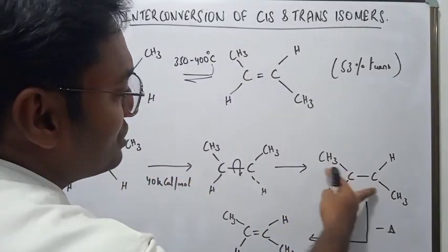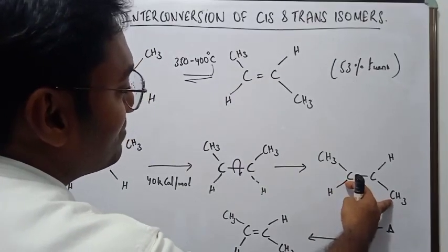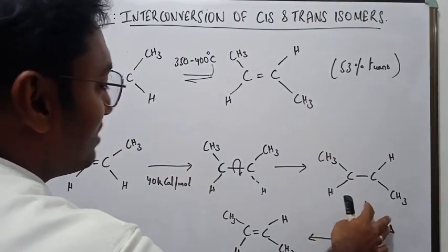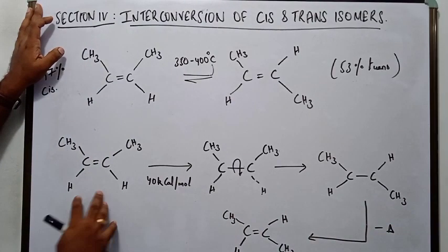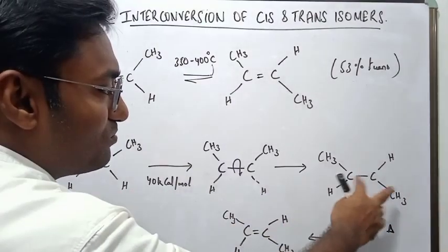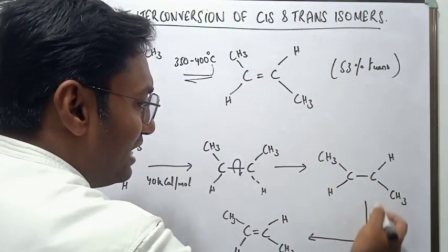When it rotates, these groups are at the farthest position possible. The bulky groups are at the farthest position possible. This is a much more stable condition than the starting product. At this situation, it is most favorable - heat is evolved; it is an exothermic reaction.